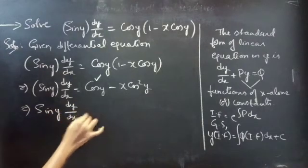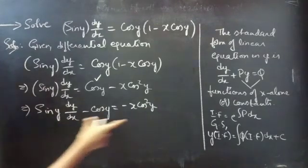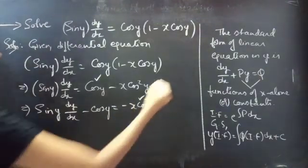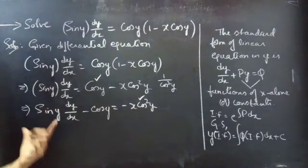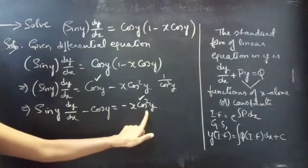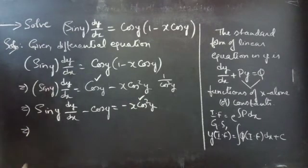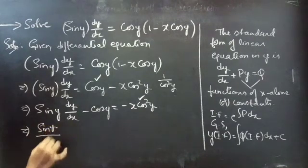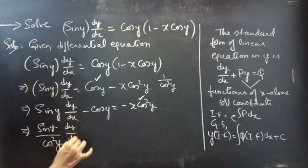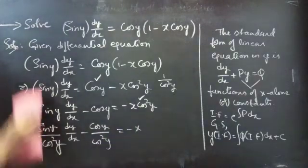sin y · (dy/dx) − cos y = −x cos² y. Now, divide both sides of the equation by cos² y — equivalently, multiply both sides by 1/cos² y — so that cos² y will be eliminated from the RHS. If we bring cos² y to the LHS, we get (1/cos² y) · [sin y · (dy/dx) − cos y] = −x. Distributing gives: (sin y/cos² y) · (dy/dx) − (cos y/cos² y) = −x.